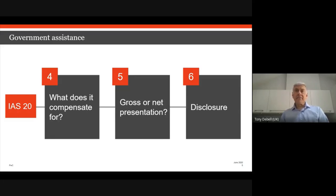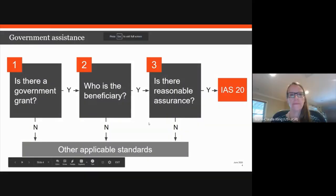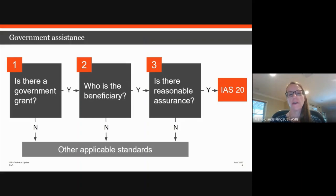Many entities have benefited from financial support provided by central banks. What should management consider to determine the accounting if it receives financial support from a central bank in response to COVID-19? Central banks may lend directly to qualifying entities such as small businesses, or provide funding to commercial banks that then lend on to their customers. Following the six steps Gary described, the first question is: is there a government grant? A central bank falls within the definition of a government entity under IAS 20.